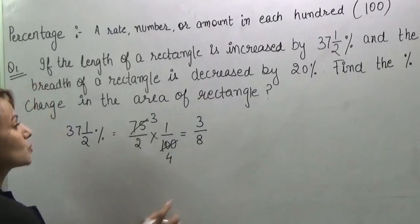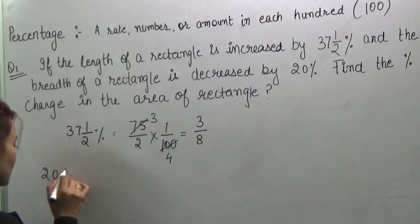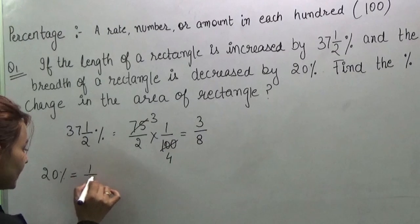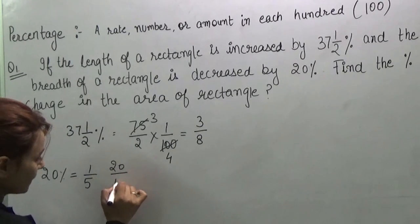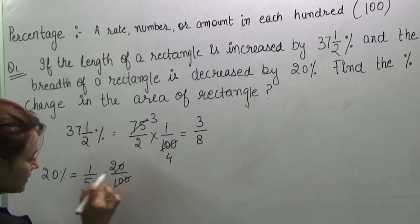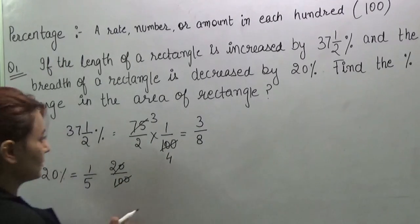Now solve this 20%. So how do we write 20%? We can write in this form because 20 by 100 is equal to 1 by 5.